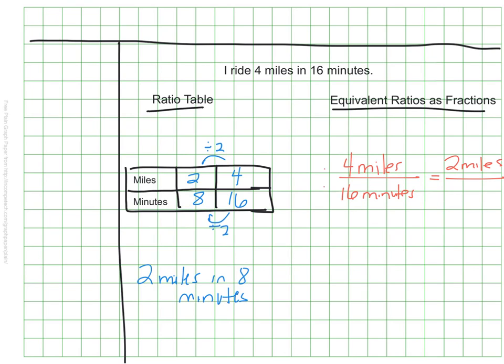I have an option to set these up as fractions. 4 miles in 16 minutes. I'm looking at the relationship and seeing that this is getting divided by 2. Remember, I never think about adding or subtracting. So I'm dividing by 2, which means I'm going to divide my time also by 2 to get 8 minutes. Either way, we see that I can go 2 miles in about 8 minutes based on this equivalent ratio.